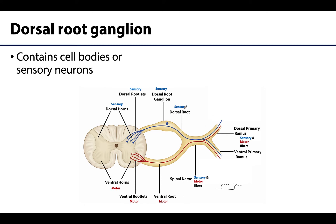On each dorsal root there will be a noticeable swelling — you will actually be able to see it, so it's grossly visible. That is the dorsal root ganglion. We know that a ganglion contains cell bodies outside or associated with the PNS, and specifically these cell bodies are of sensory neurons, because everything is sensory over here.